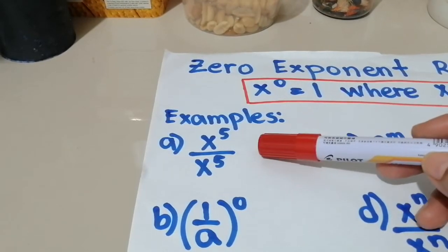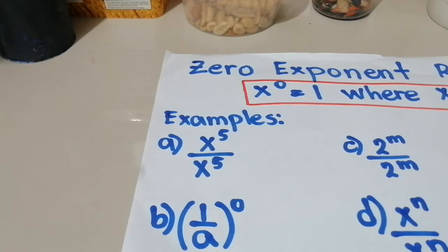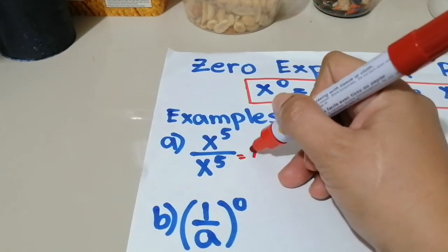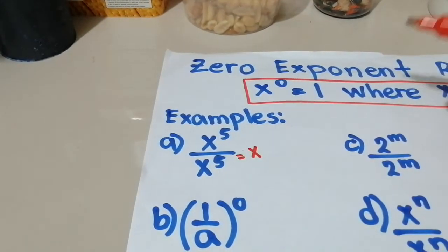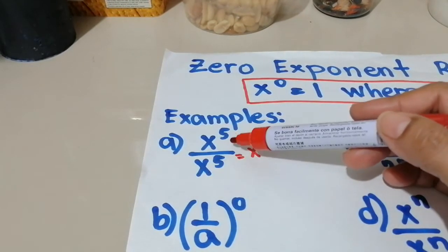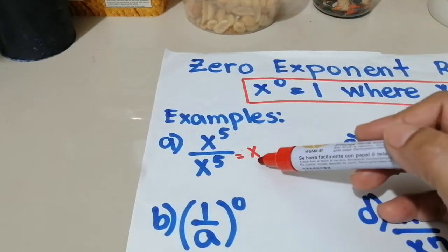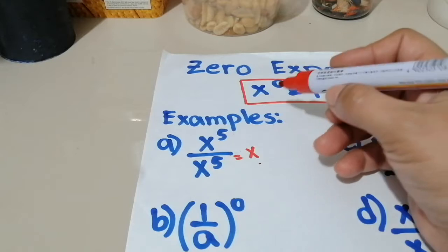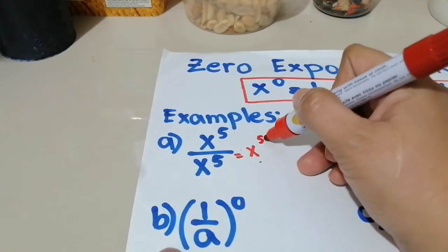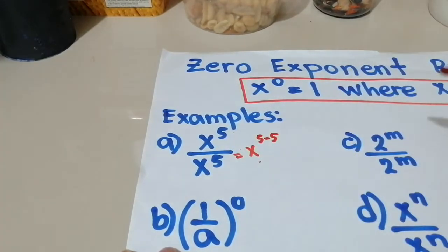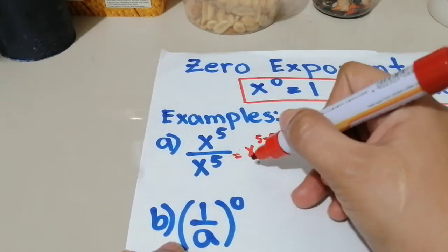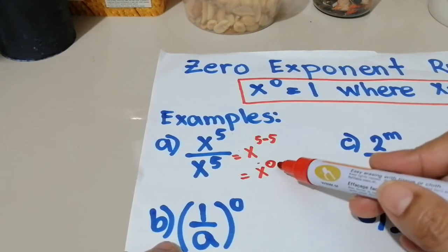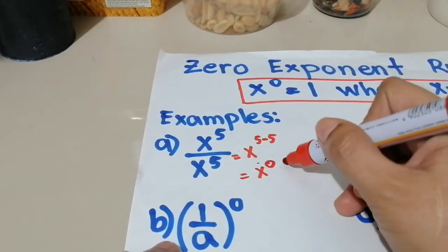Unang-unang gagawin natin dito, we need to simplify. So what is the rule in the division rule? That's the last topic I discussed. Division rule states that we copy the basis and subtract the exponent. Copy the basis, x is yun, and then subtract natin yung exponent. So this will become x to the 5 minus 5. So x to the 5th power minus 5, anong magiging answer dyan? That will be x to the 5 minus 5 is 0. At dahil ang exponent ng x dito is 0, then the final answer here is equal to 1.